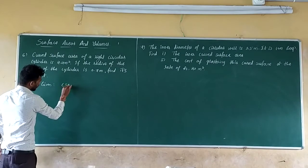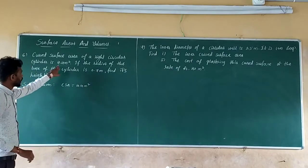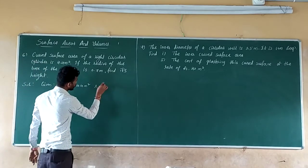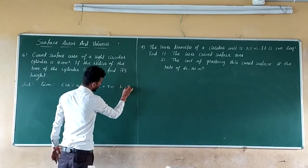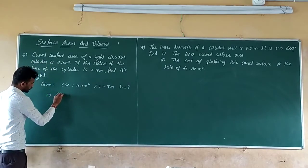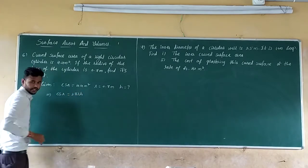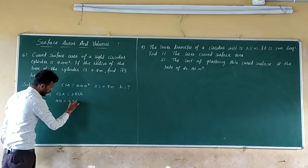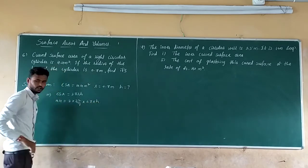CSA is given as 4.4 m² and radius is 0.7 m. We need to find the height. Use the CSA formula: CSA equals 2πrh. So 4.4 equals 2 into 22/7 into 0.7 into h.